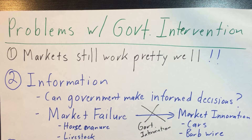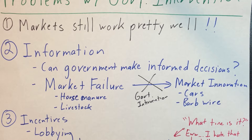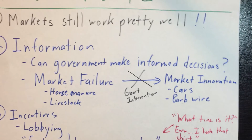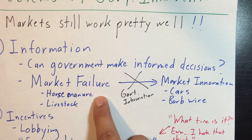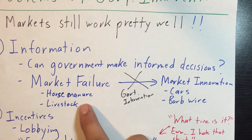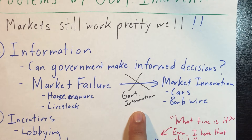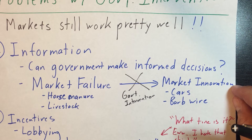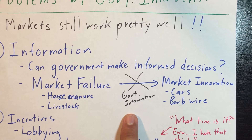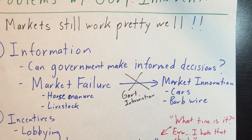Second, there's the information problem. Can the government make a better-informed decision than the failing market? Can it decide the right amount of fireworks or how many police to hire — and by what criteria? Interestingly, some historical market failures were solved by market innovations rather than government: the externalities of horse carriages in Manhattan were solved by the advent of cars, and livestock theft in the old West was solved by barbed wire. Maybe market failure is just the market signaling that a need exists, inviting a market solution.